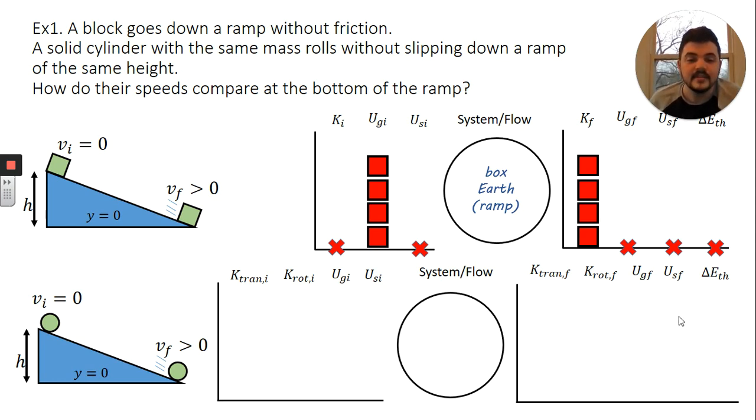Identifying my system. The system's going to be the cylinder, the Earth, and the ramp. The ramp is important here because we're rolling without slipping. In order for that to happen, there must be some friction present that is torquing the cylinder so that it rolls. However, this friction does not slide at all. So there's going to be no increase in thermal energy. All the friction is doing is transferring energy into the rotation of the cylinder.